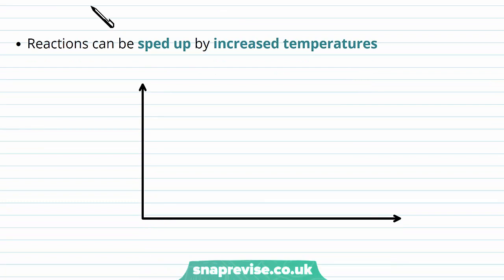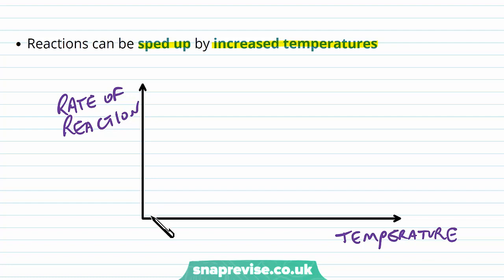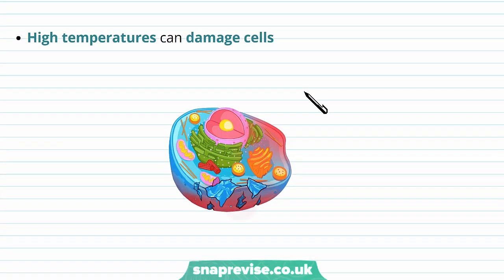Reactions can be sped up by some factors, for example increasing the temperature. If we measure a graph with rate of reaction on the y-axis and temperature on the x-axis, increasing the temperature of where a reaction happens does give a higher rate of reaction. So you may think, why doesn't the body just live at about 100 degrees? Well, high temperatures are very dangerous and damage cells in two major ways.